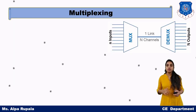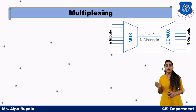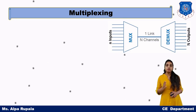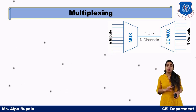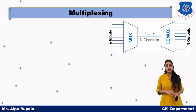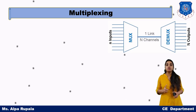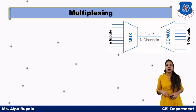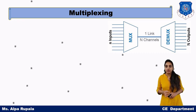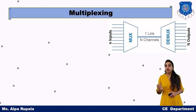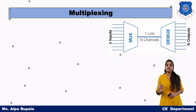So what is multiplexing? As we can see in the diagram, we have N number of users or N number of inputs and only one transmission channel. Whenever we have a large number of input data but a single transmission channel, we can combine all the channel data into a single signal for transmission. We have already seen this kind of example in our DSSS topic.